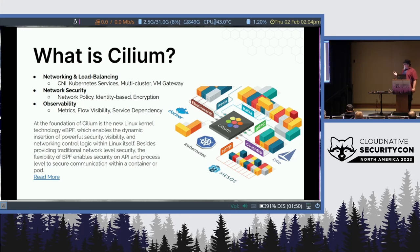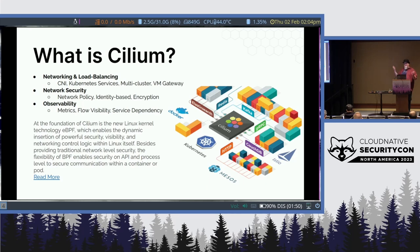This also gives us unprecedented visibility. We're able to persist down into user space an event stream that describes what applications are connecting to what other applications, how they're connecting, whether that was allowed or denied, and whether there was a network policy decision about it.